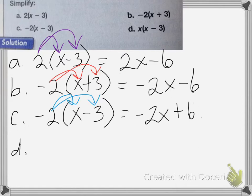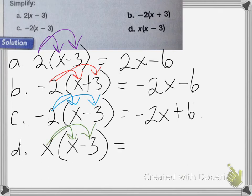For D, we have x times (x minus 3). We still distribute x the same way — x times x equals x squared, minus x times 3, which is 3x. So the result is x squared minus 3x.